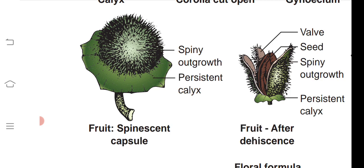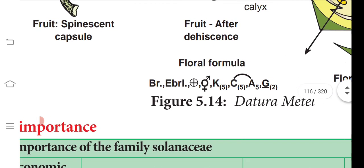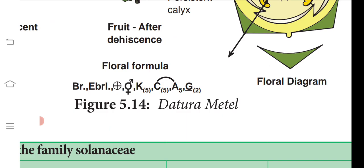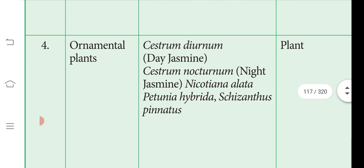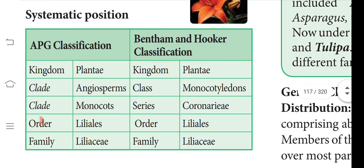The fruit has spiny outgrowths and a persistent calyx. After dehiscence — when the fruit splits open — seeds are visible inside with the spiny outgrowth and persistent calyx present. The floral formula for Solanaceae: bracteate, bracteolate, actinomorphic, bisexual; calyx 5 fused, corolla 5 fused, androecium 5 attached with corolla, gynoecium 2 fused, ovary superior. Economic importance should be studied independently.